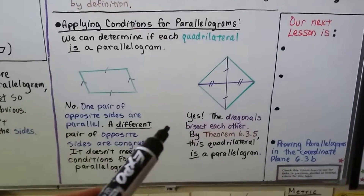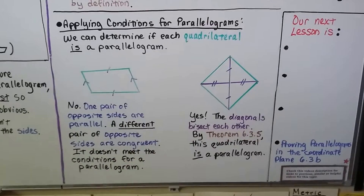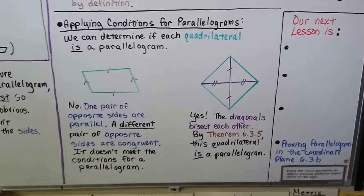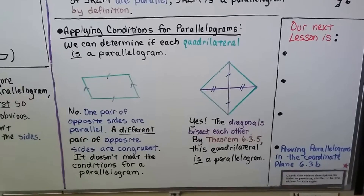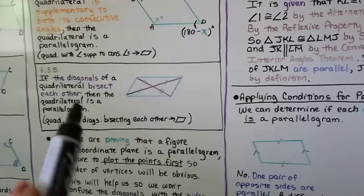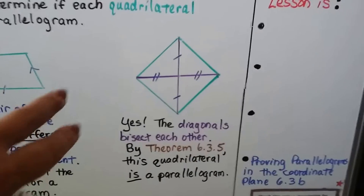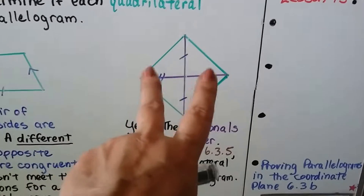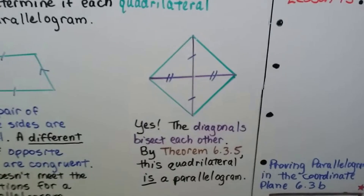For the second example, the diagonals bisect each other, so yes — it is a parallelogram by theorem 6.3.5. The diagonals bisect each other perfectly because these two segments are congruent and these two segments are congruent, putting the intersection point dead center.